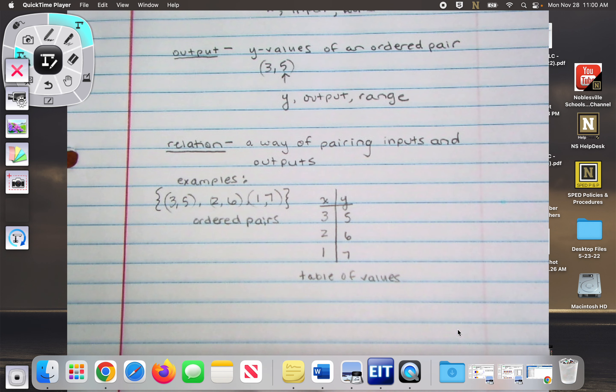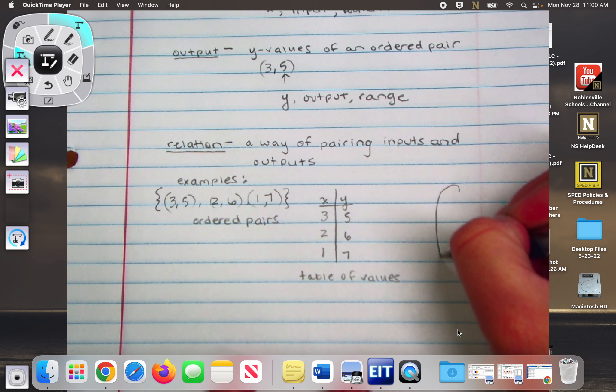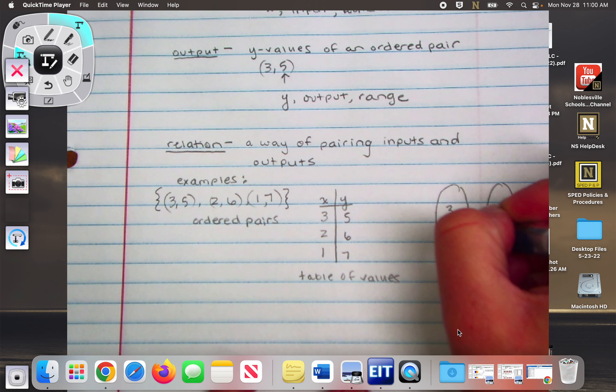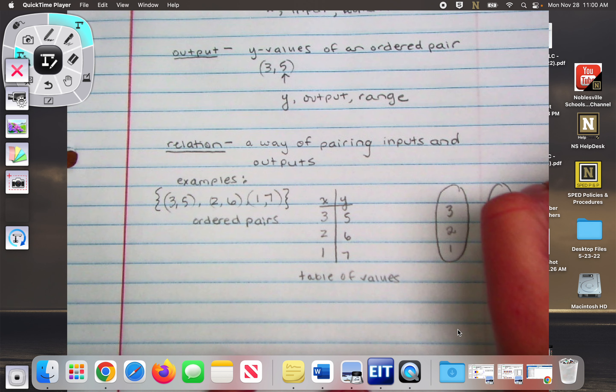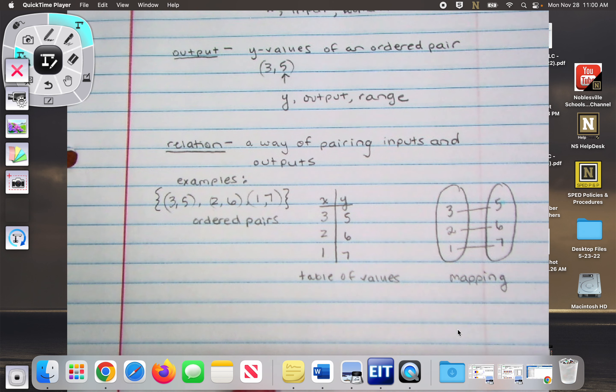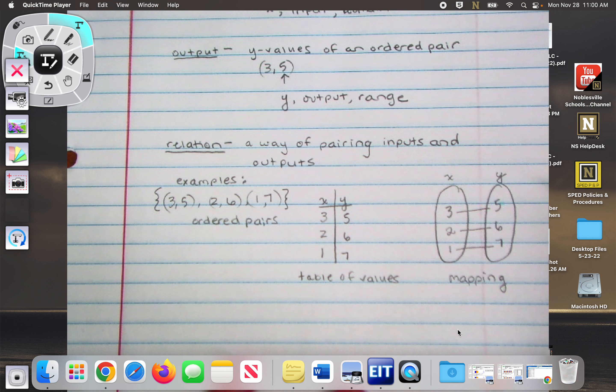And then another way to show a relation is through a mapping, which is kind of like a table. You just draw two ovals. And you connect them through the two ovals. Yes, they do. Okay. And we have our x values connected to our y values.